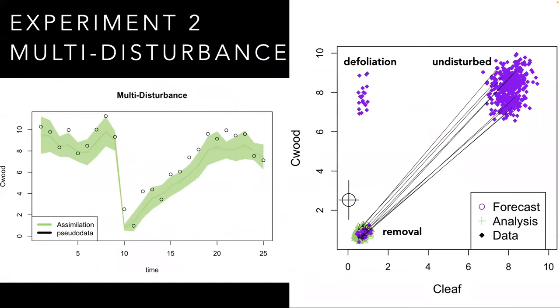In our second experiment, we introduced two alternative disturbances for the algorithm to select between. One is the defoliation that only reduced leaf biomass, and the other as a removal that reduced both leaf and wood biomass. The assimilation correctly ascribes the observations to the removal event.